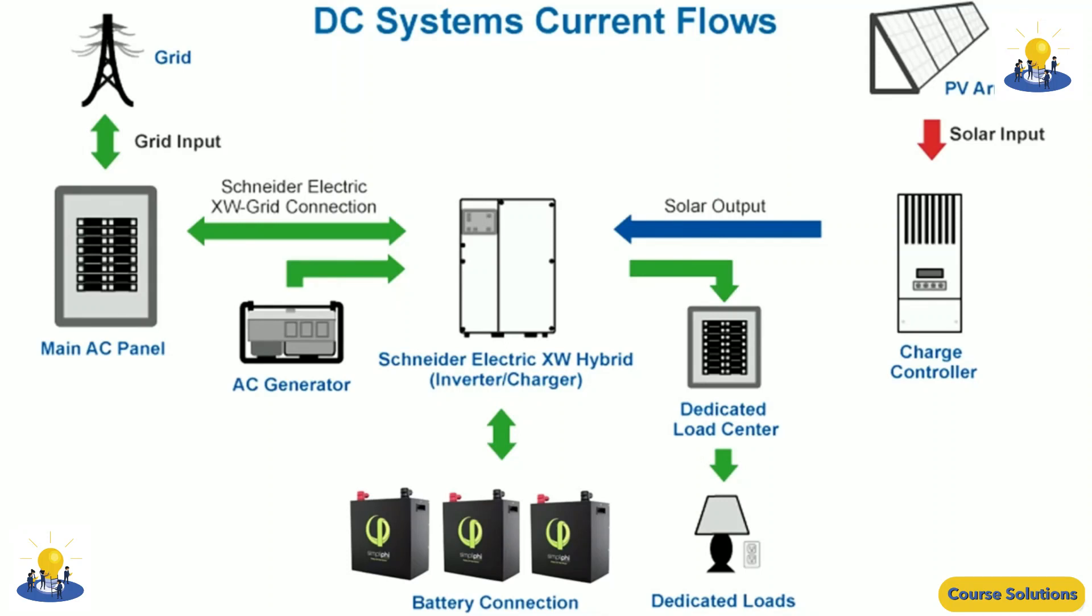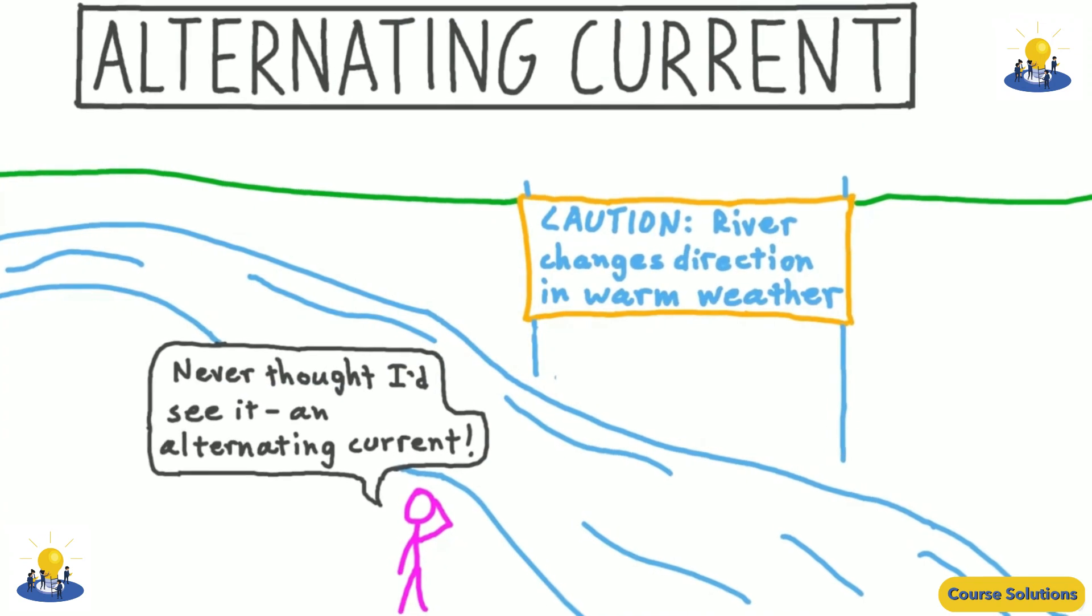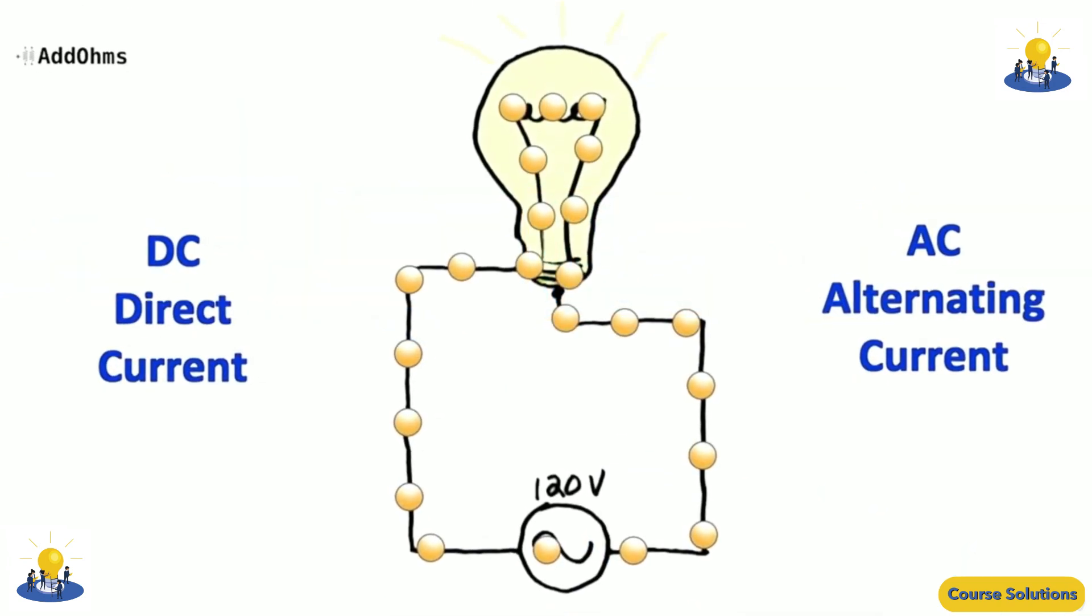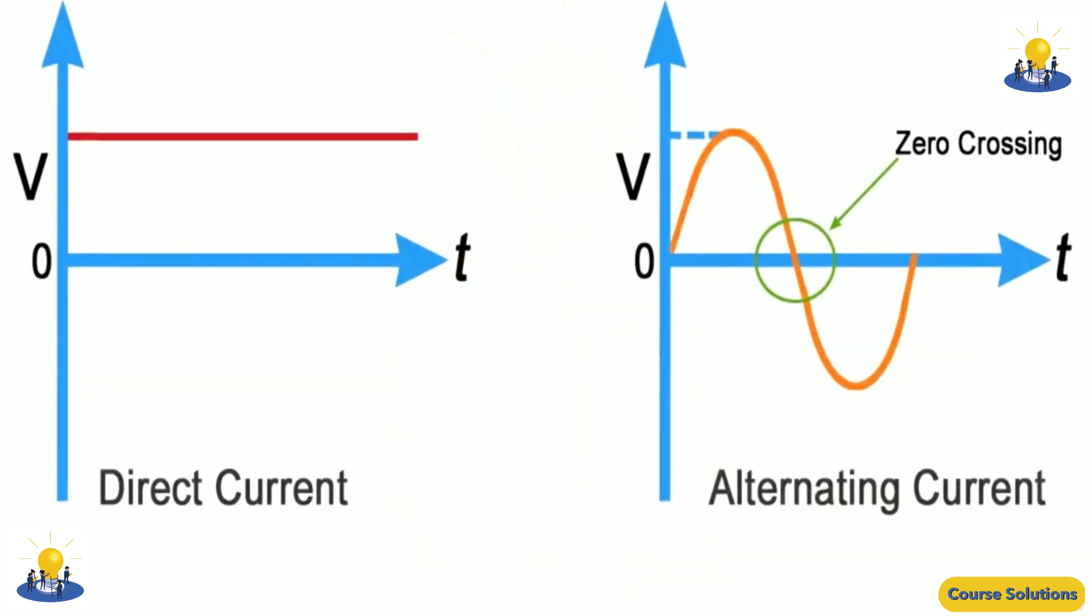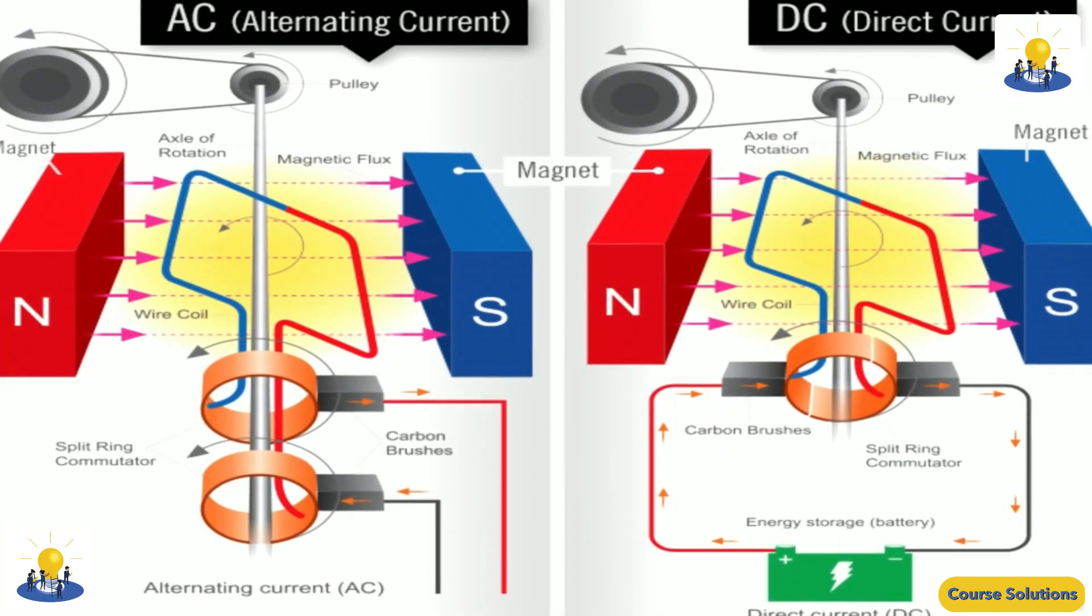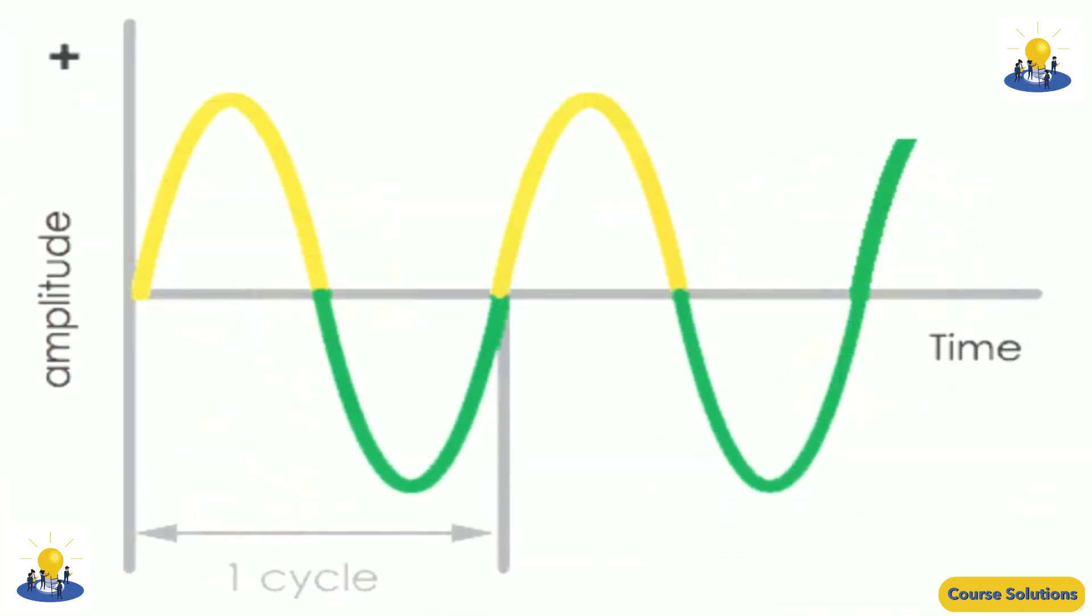Alternating current, abbreviation AC, flow of electric charge that periodically reverses. It starts from zero, grows to a maximum, decreases to zero, reverses, reaches a maximum in the opposite direction, returns again to the original value, and repeats this cycle indefinitely.